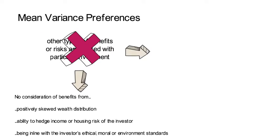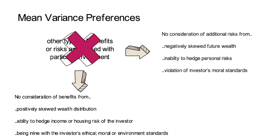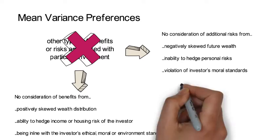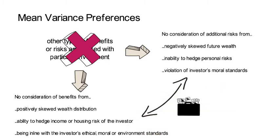Likewise, additional risks such as negatively skewed future wealth or fat tails in the wealth distribution or the inability to hedge personal risks or the violation of personal moral standards are not considered in these mean variance preferences. So the portfolio to an investor who likes to consider all of these dimensions might look very different than the mean variance optimal portfolio.